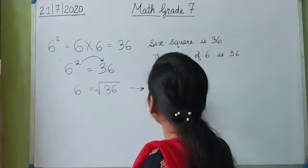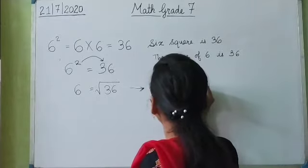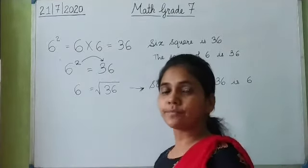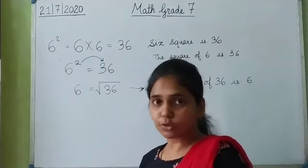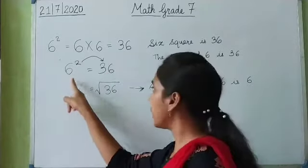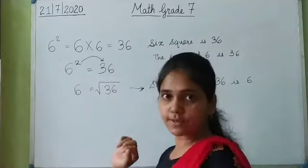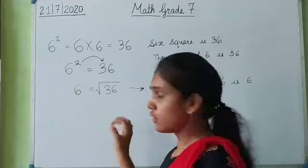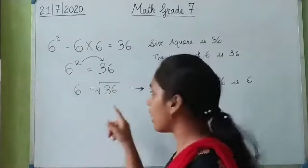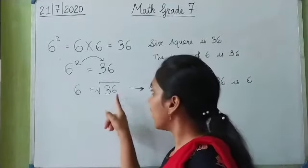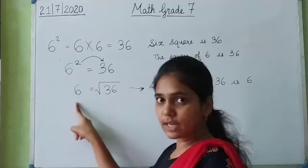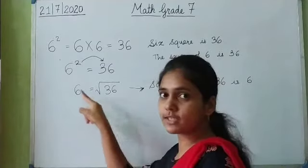A square of a number means if we multiply a number by itself 2 times, the number obtained is the square of the given number. So 36 is the square of 6. If we want to find the square root — if 36 is given and we have to find a number which after squaring becomes 36 — we recall which number multiplied by itself gives 36. When we multiply 6 by itself 2 times we get 36, so the square root of 36 is 6.